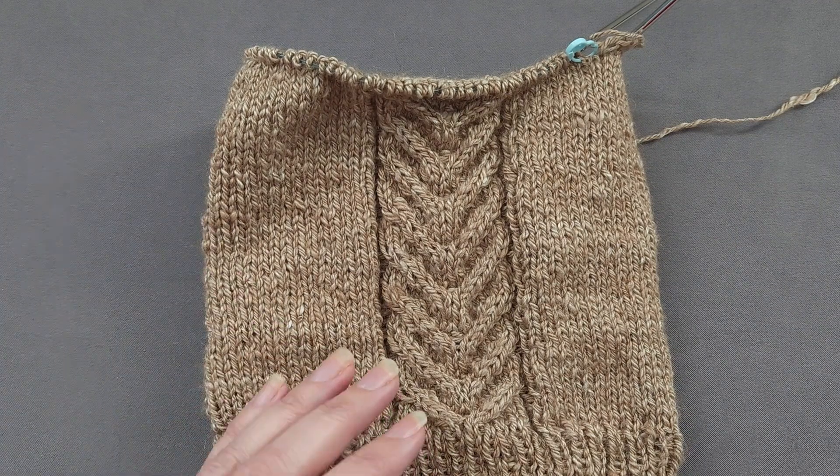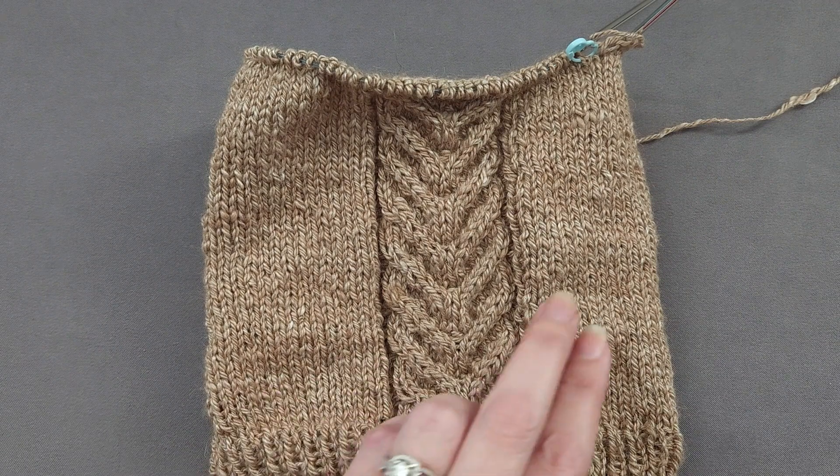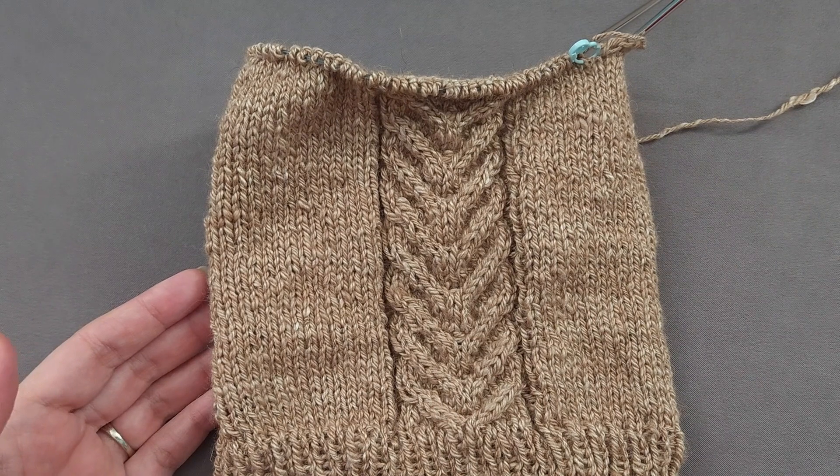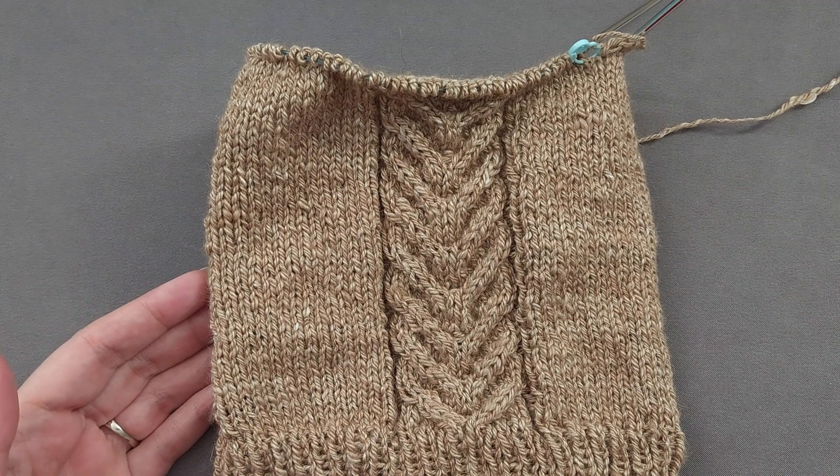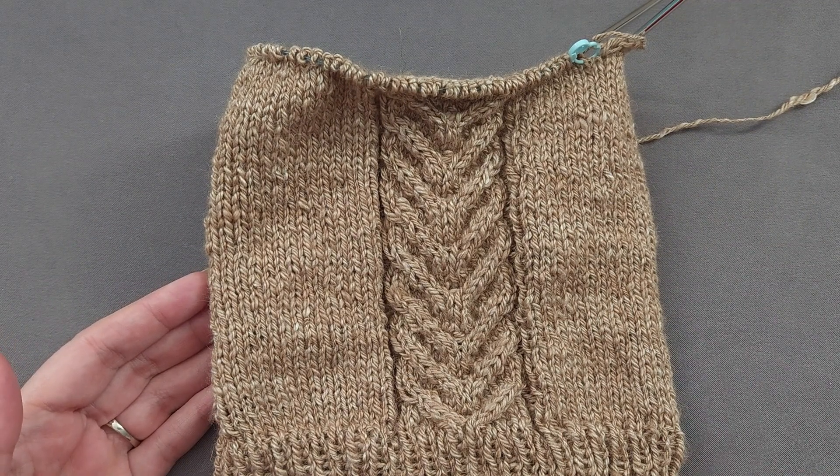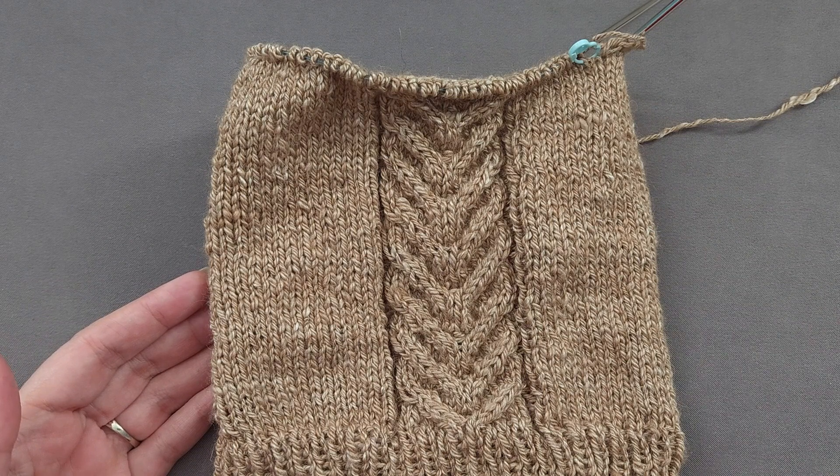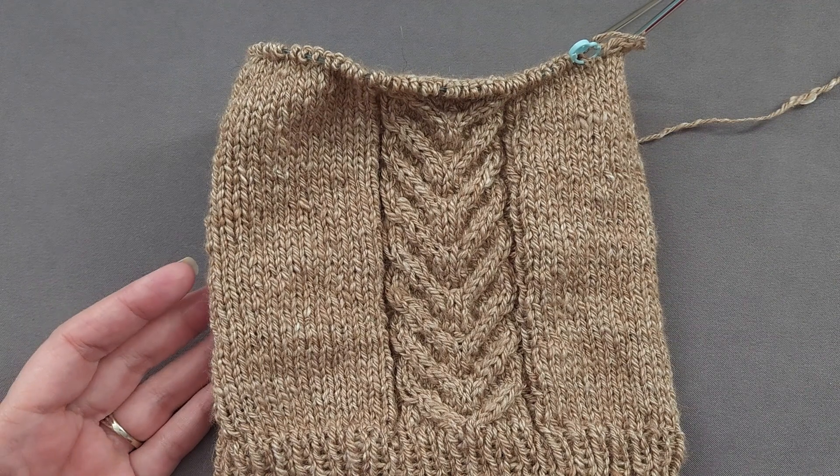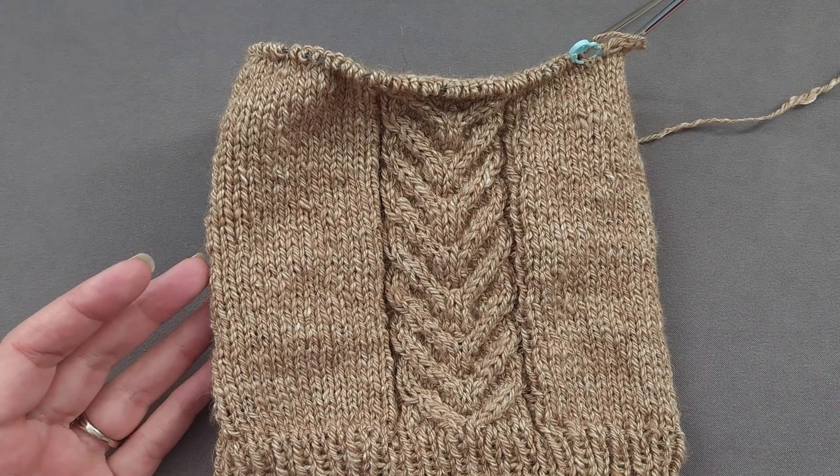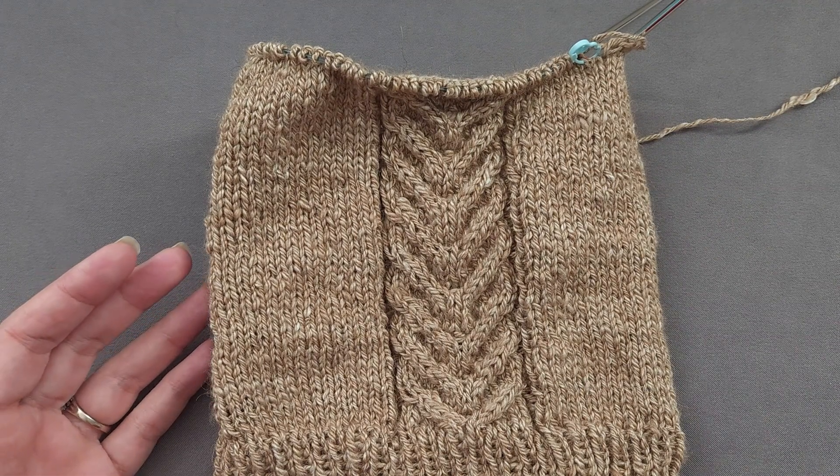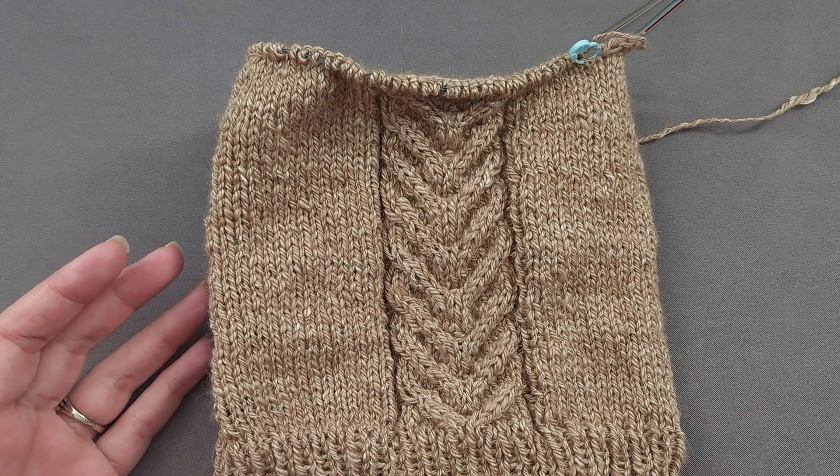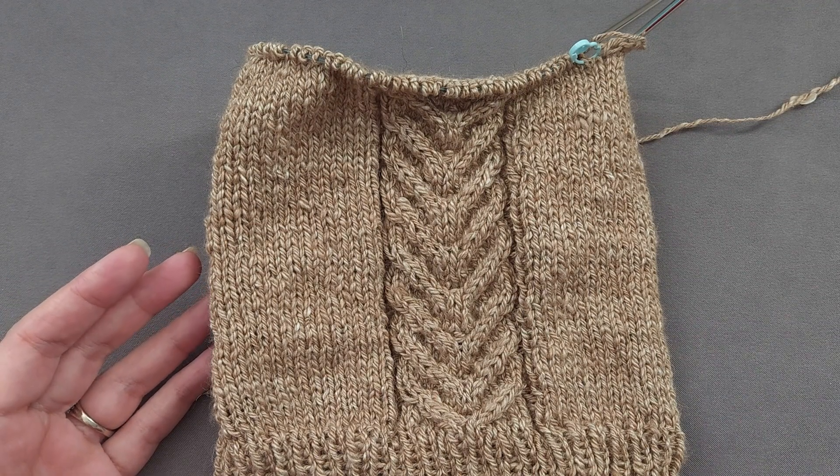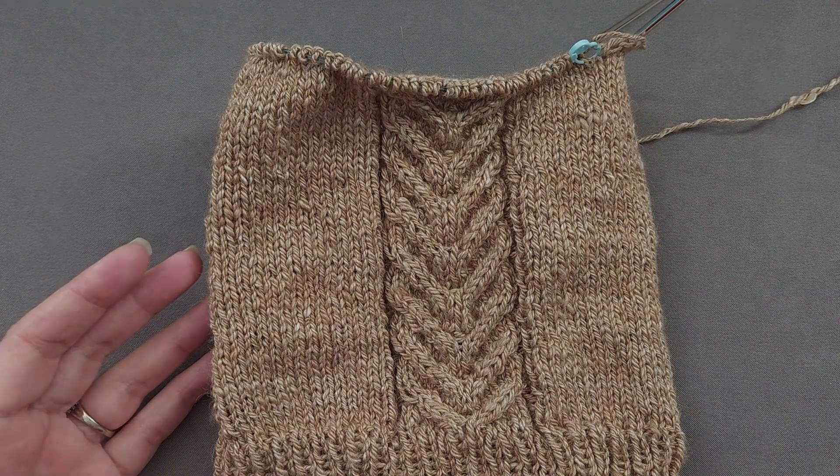I'm also choosing to decrease two stitches in each section on each decrease round, so 12 stitches will be decreased every time I work a decrease round. And just in case you're wondering, depending on your yarn weight and the size of your hat and how you want it shaped, decreasing between 4 and 16 stitches per decrease round would be a reasonable way to shape the top of a hat.